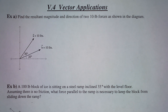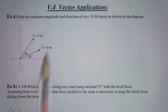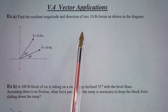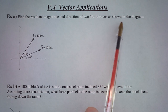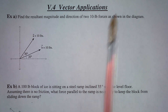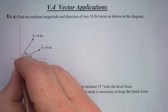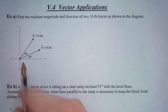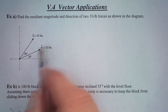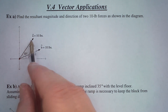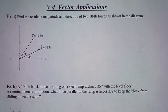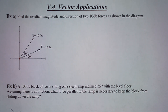Hey guys, today we are going to apply vectors to real-world situations. First, find the resultant magnitude and direction of two 10-pound forces as shown in the diagram. So if there's some object here and there are two 10-pound forces pulling it in two directions, what is the actual magnitude and direction of the force? How much force is being applied and in what direction?